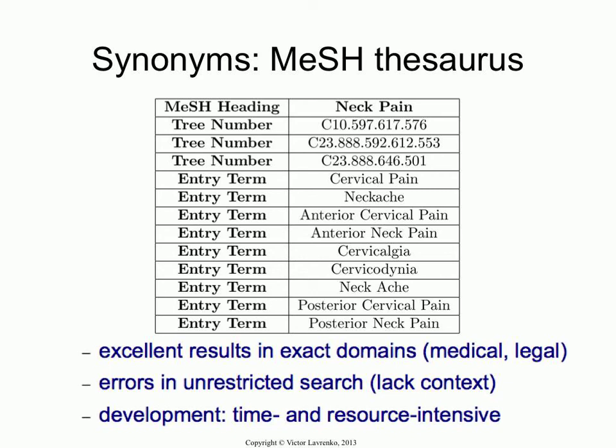But a MESH thesaurus allows you to take a term like neck pain and look up a set of synonyms. All of these terms are used in the literature to refer to neck pain in various ways. You also have tree numbers — this is a hierarchical structure, and these numbers refer to the nodes in the tree.